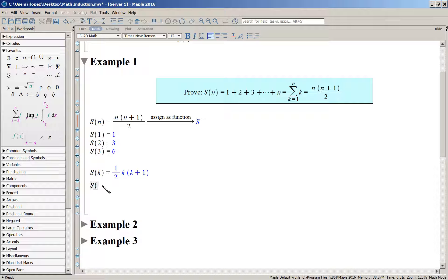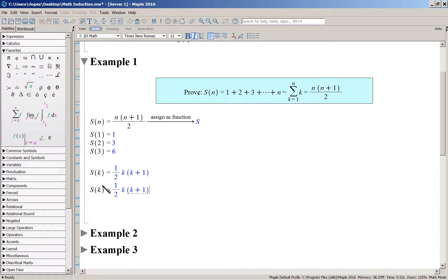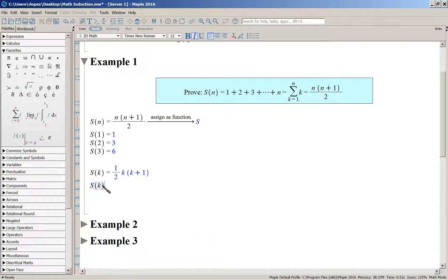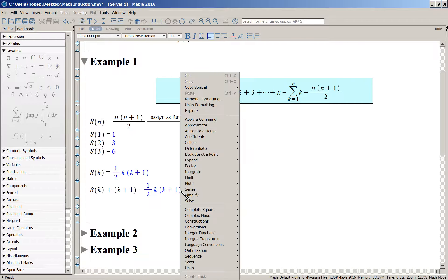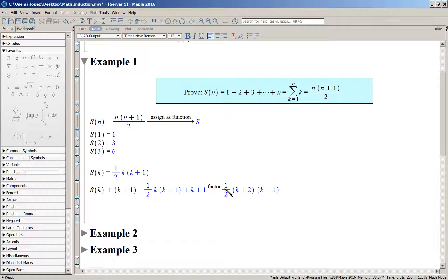So let's take S of K and add to it K plus one. What was that equal to? Well there's your K, K plus one over two, and I've added K plus one, and a little algebra. Let's factor that for example, and it becomes one-half K plus two, K plus one.